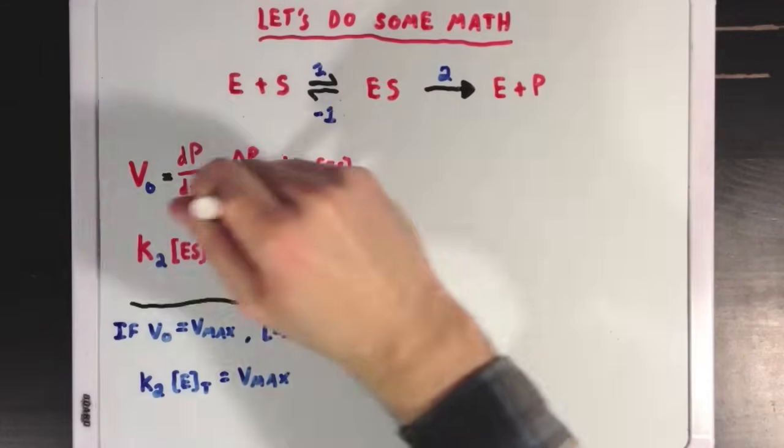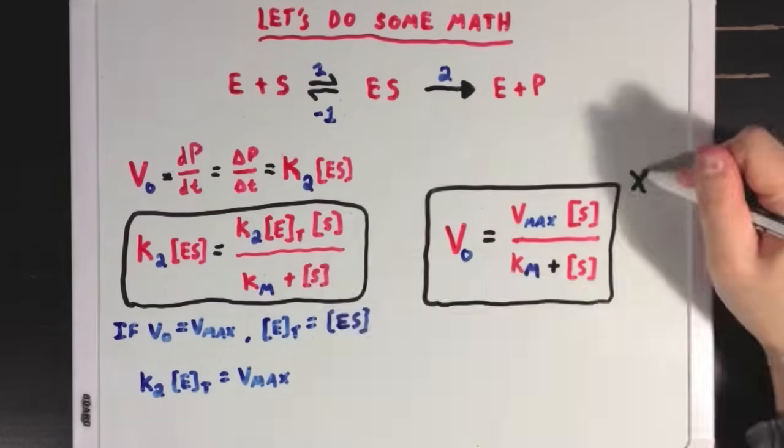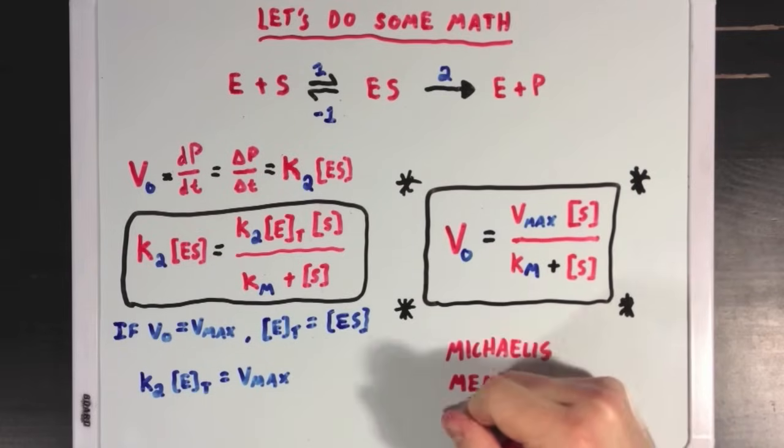So, I'll make some room here, and then sub in K2 ES for VO, and K2 ETotal for Vmax, and then we finally get to our end equation, which is called the Michaelis-Menten equation, and is super important when we talk about enzyme kinetics.